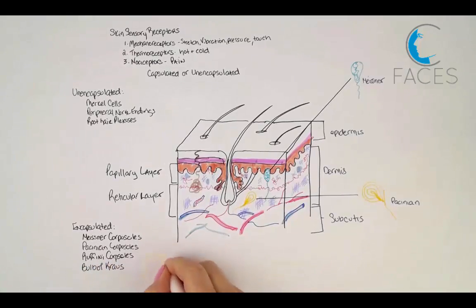Bulb of Krause receptors sense cold and are only located in the mucous membrane of the lip.